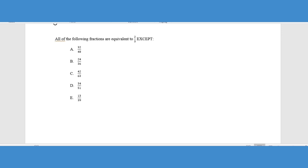This first question says all of the following fractions are equivalent to two thirds except, and so of course we've got this extreme word here, except. So we know that only one of them is not going to be equal to two thirds.